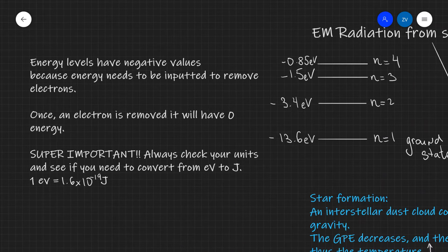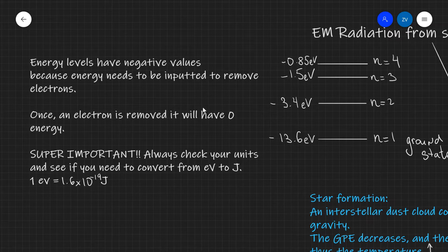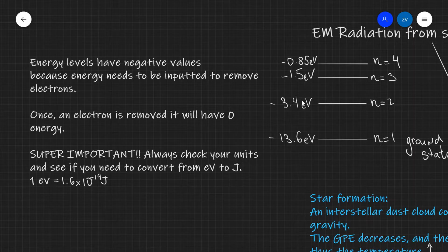It's also really important to note that energy levels have negative values because energy needs to be inputted into the system to remove electrons. Once an electron is removed it will have zero energy. Please always check your units and see whether you need to convert from eV to joules. If you want to calculate anything from this graph in SI units, you will need to convert from electron volts to joules. The conversion factor is multiplying by 1.6 × 10⁻¹⁹, which is the electron charge.